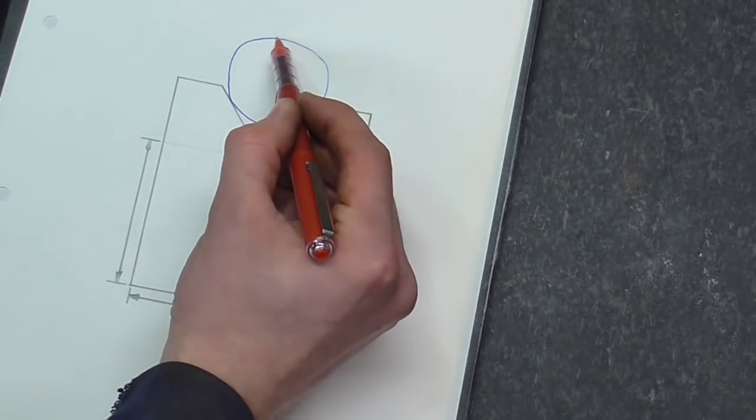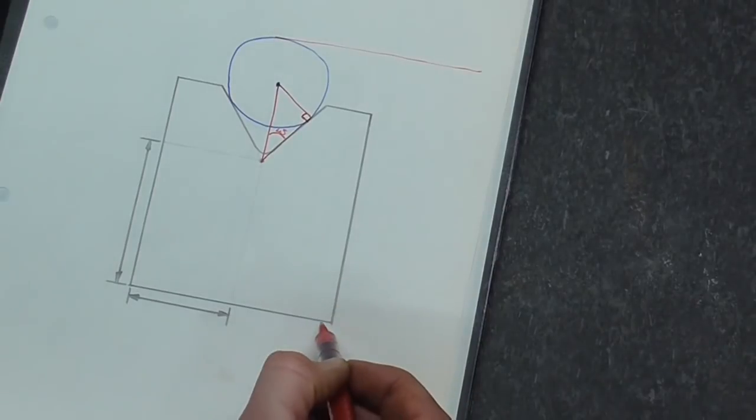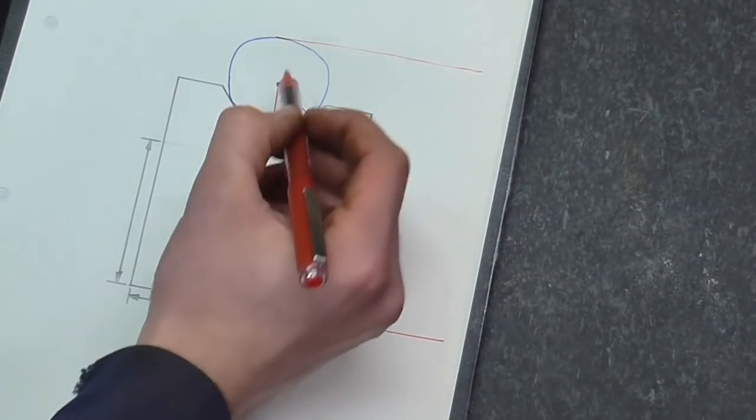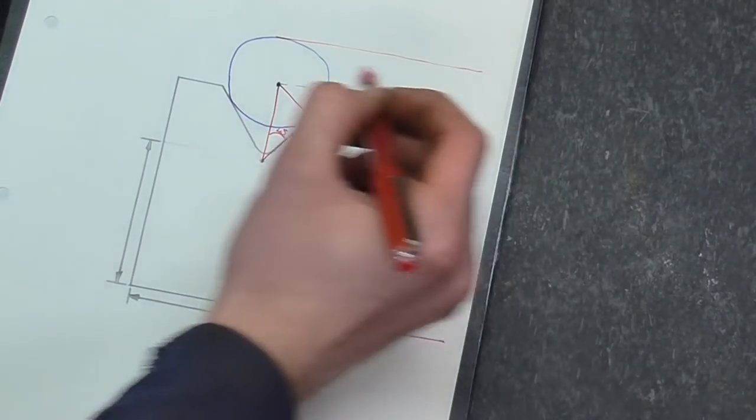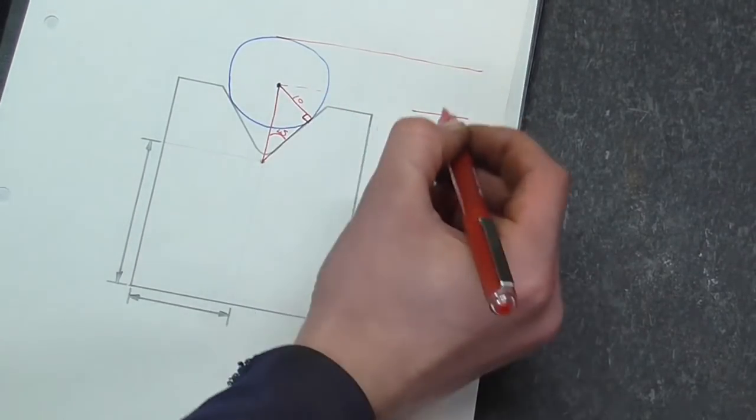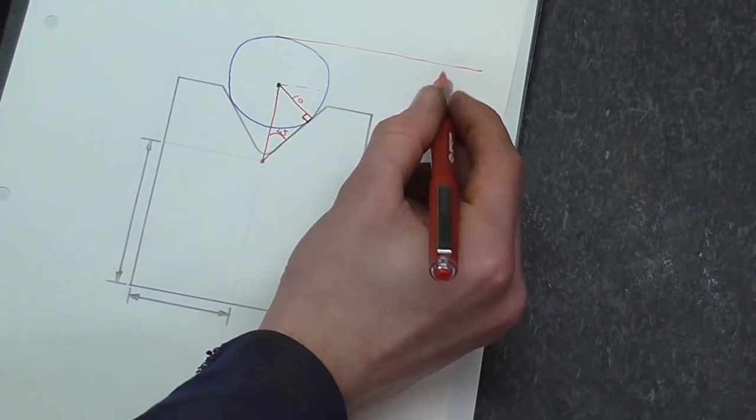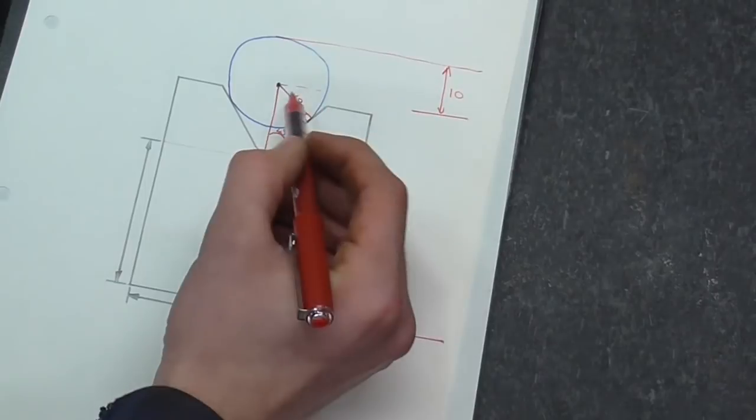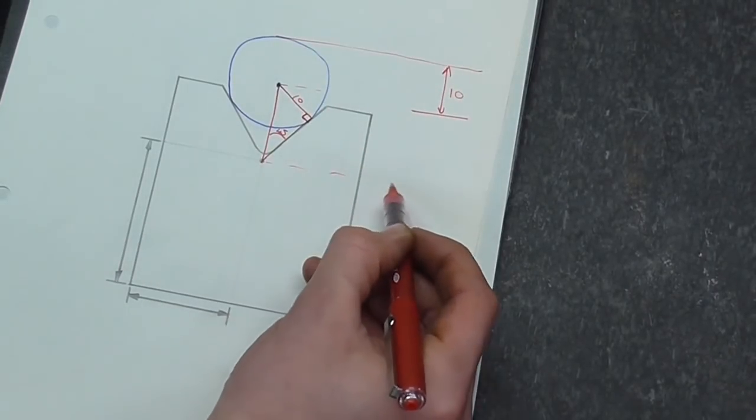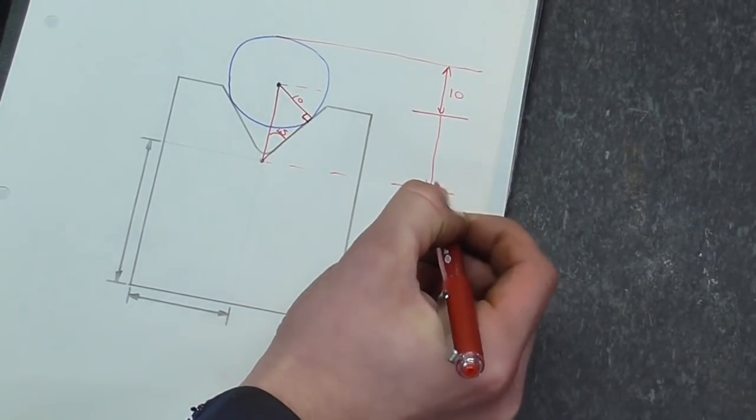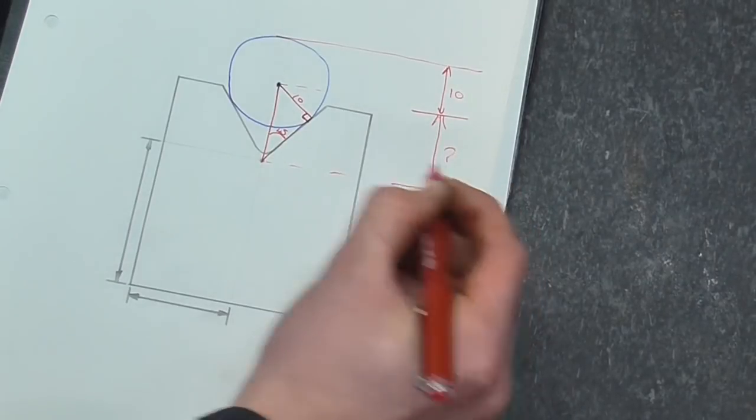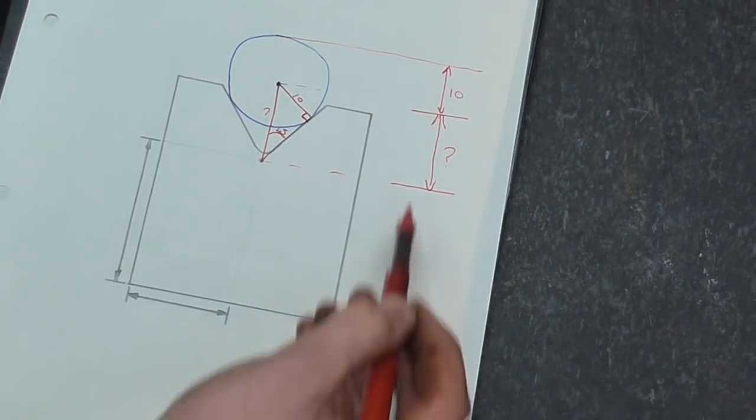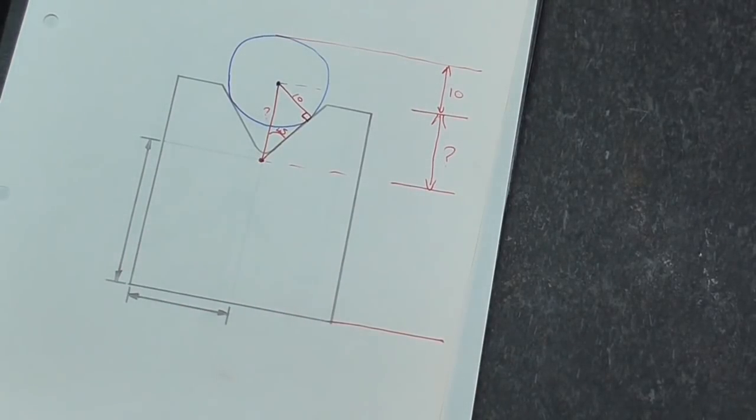You then measure over the whole thing and you deduct, first of all, the radius. So say this is a 10mm radius, so that's going to be 10mm down, and you then deduct the length of the hypotenuse.